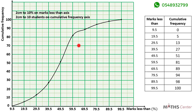In some questions they will tell you to draw the cumulative frequency polygon. If it's a polygon, you join the points with a straight line using your ruler. But if the question asks you to draw the cumulative frequency curve, you join them freehand to get the curve, just as we have done here.